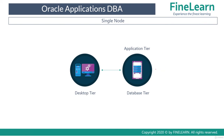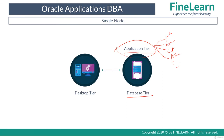A single-node deployment or single-node installation of Oracle eBusiness Suite means that there is only one machine on which both the application tier and the database tier are installed. All the servers related to the application tier — for example, web server, form server, concurrent processing server, and even the WebLogic admin server — will run on that same machine. And the RDBMS, which is the database server, also runs on the same system. If you are running both application tier and database tier on the same machine, then it is called a single node.